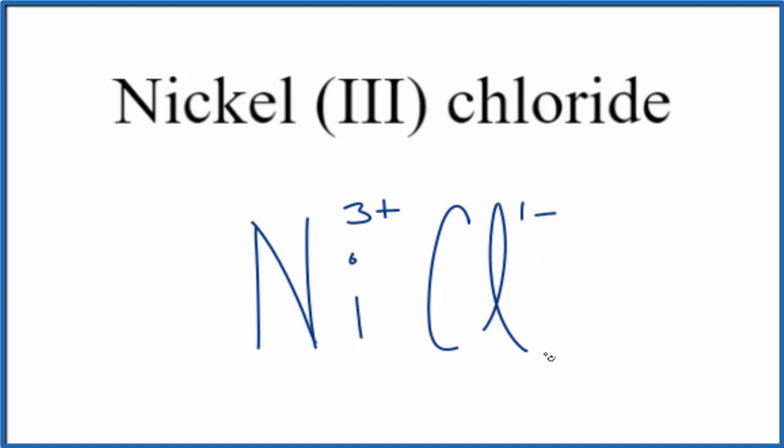So if we put a subscript here, 3, 3 times 1 minus, that gives us 3 minus, that'll balance the 3 plus, give us a net charge of zero. So this is the formula for nickel 3 chloride, NiCl3.